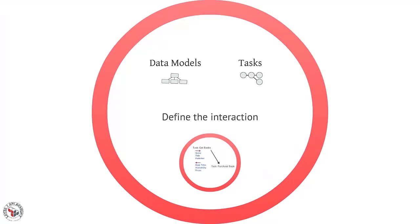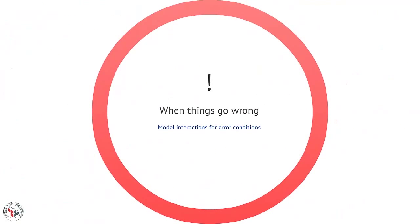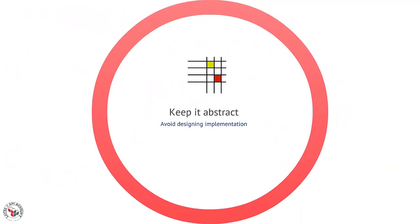And at this point you should be able to construct a usage scenario that includes a data model and the task that the consuming application is likely to execute. So this would be the information that passes back and forth to go along with the tasks that you defined in the last step. Don't forget to model error conditions, as these are an important part of the interaction, and try your best to keep this abstract. We're not talking here about forming URIs or defining message formats. We're really interested in an abstract definition of the interaction.